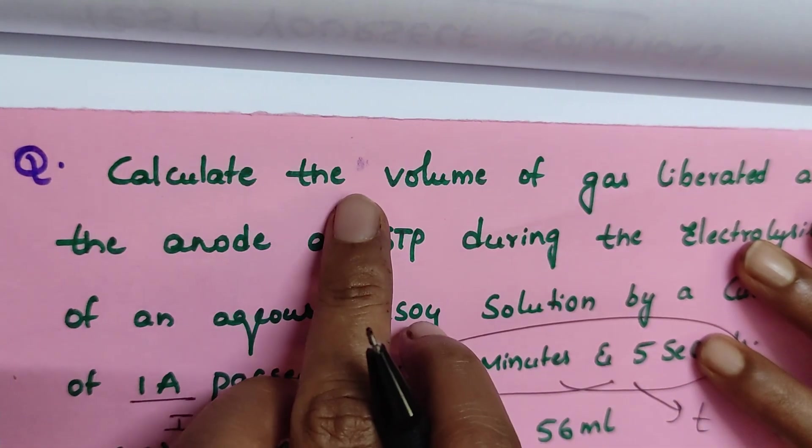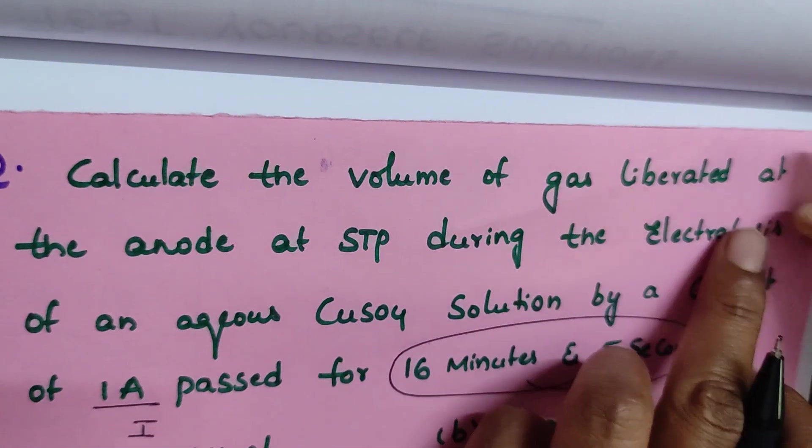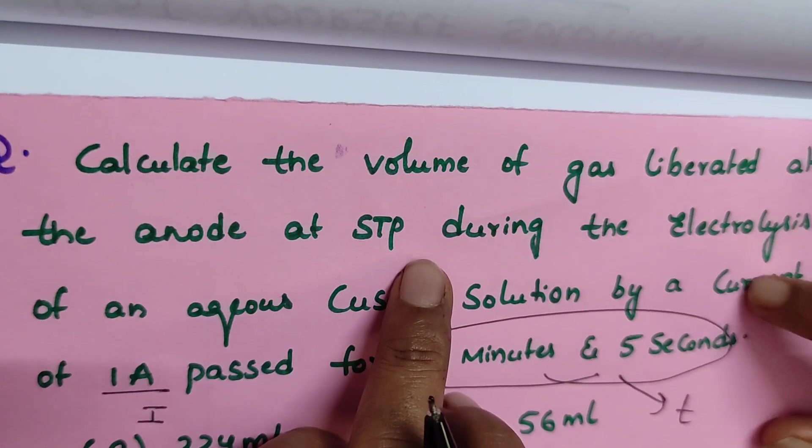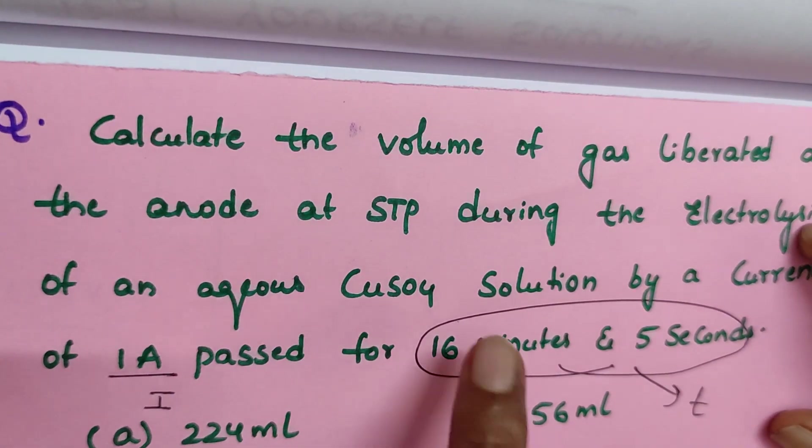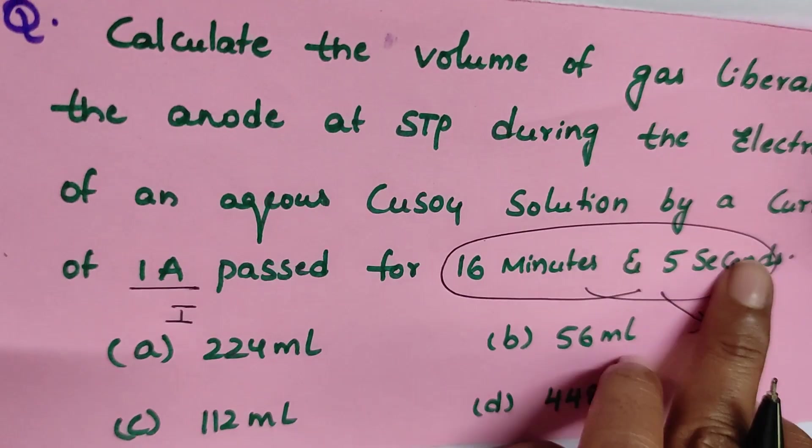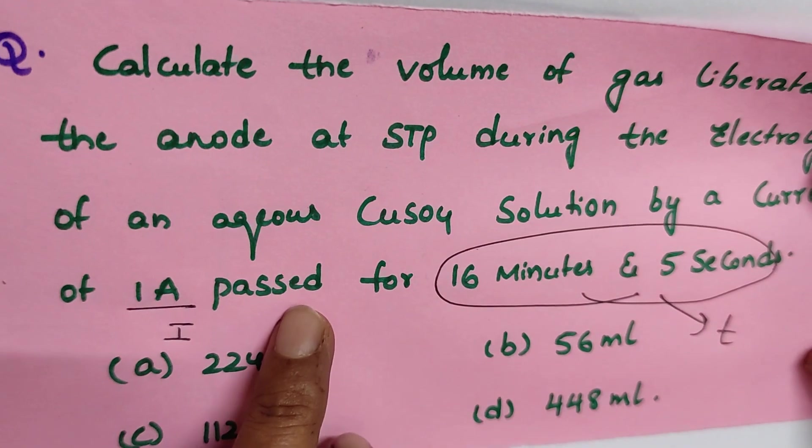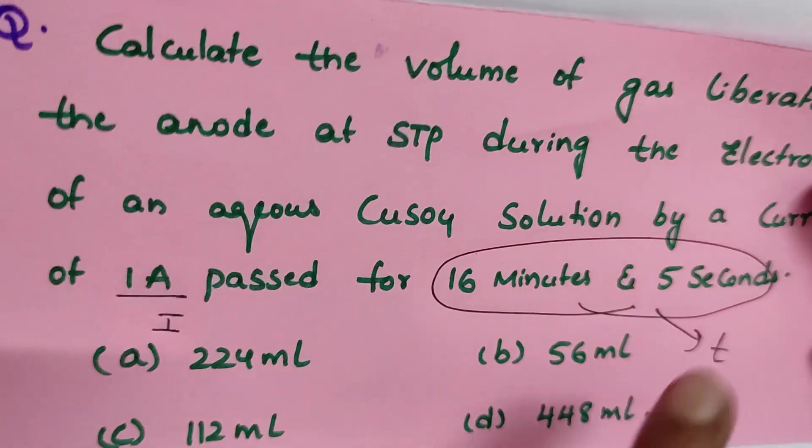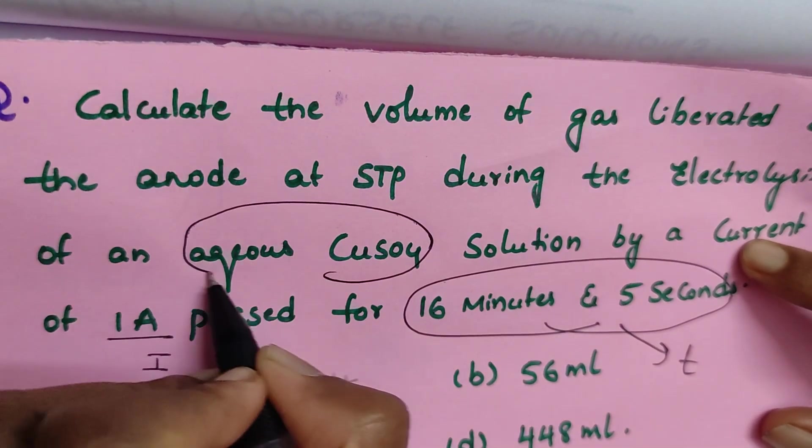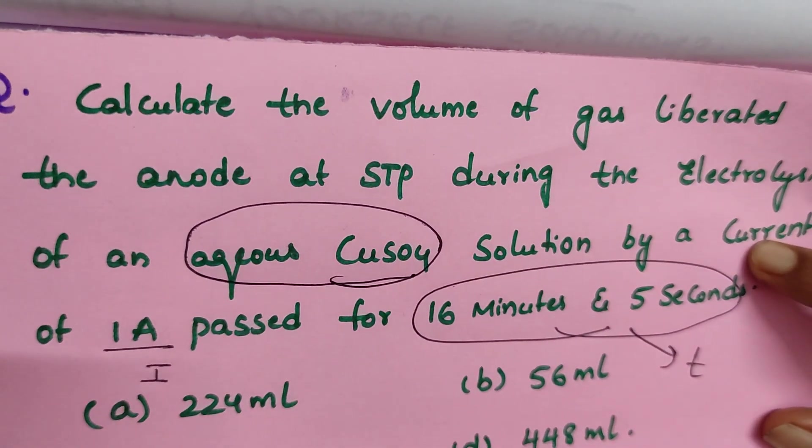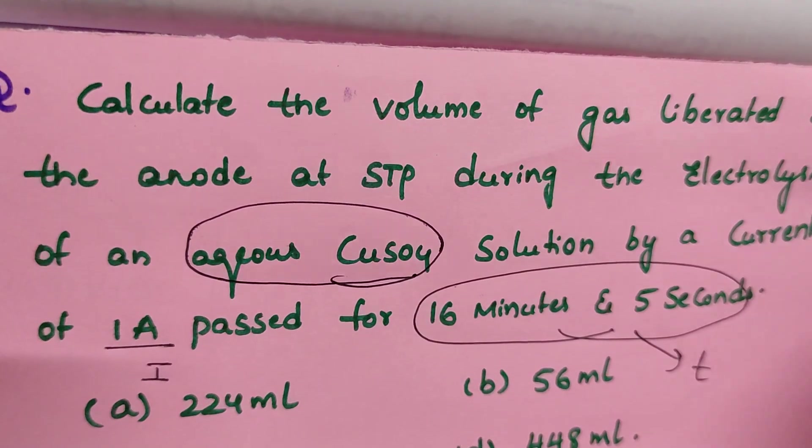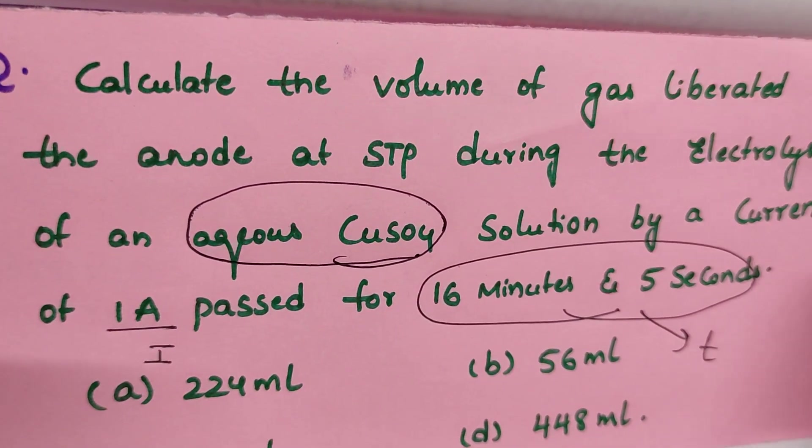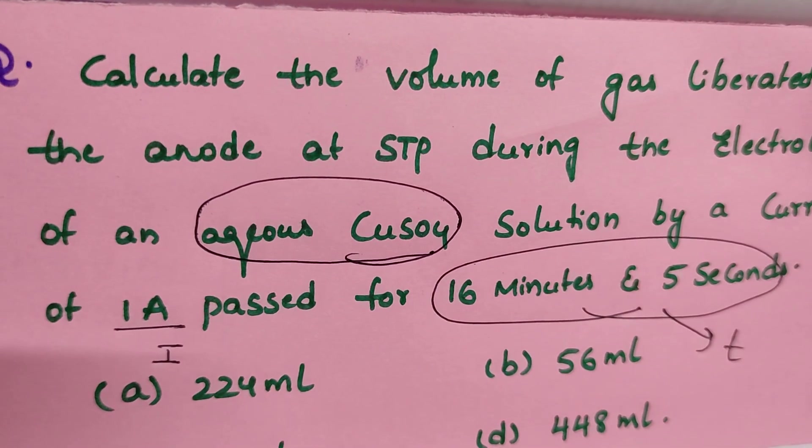Calculate the volume of gas liberated at anode at STP during the electrolysis of an aqueous copper sulfate by a current of one ampere passed for 16 minutes and 5 seconds. In this question, aqueous copper sulfate, if you do electrolysis, what will be the products formed?